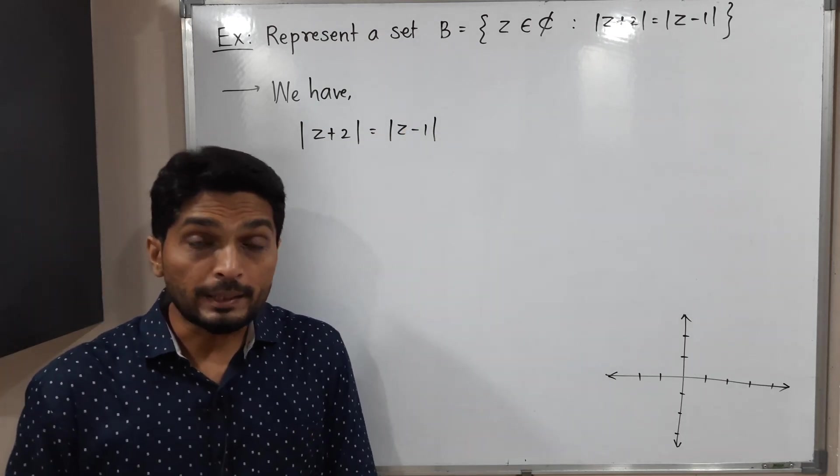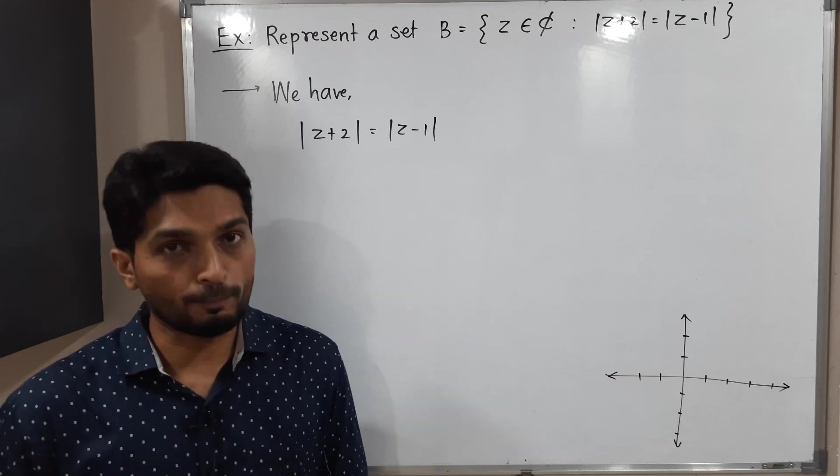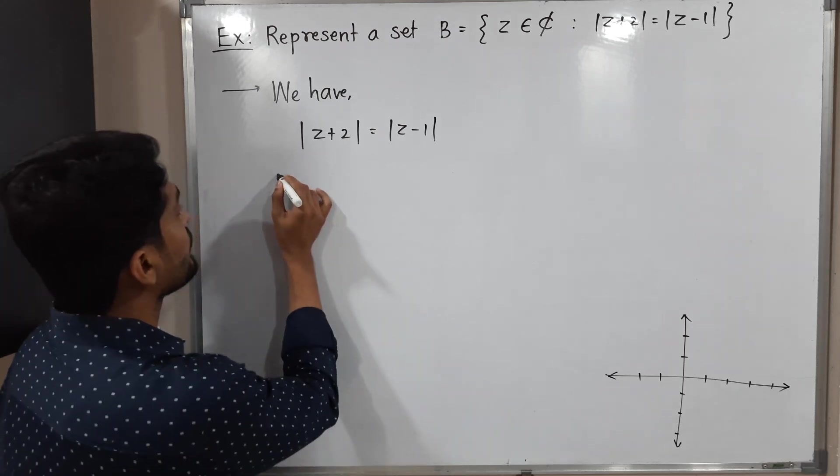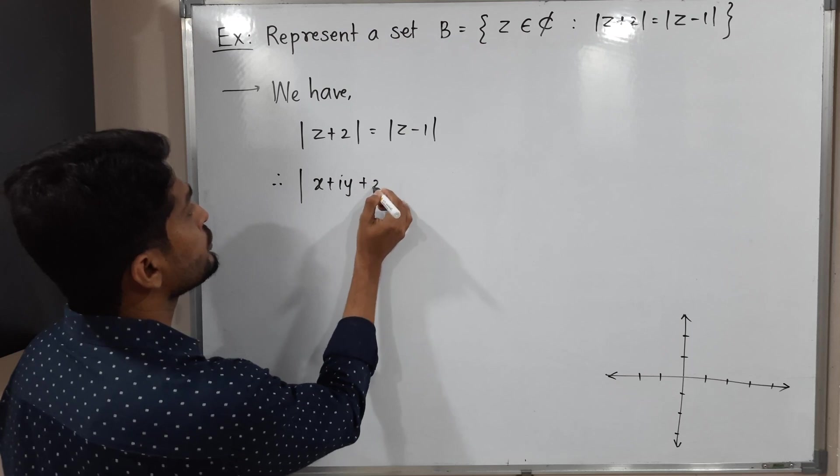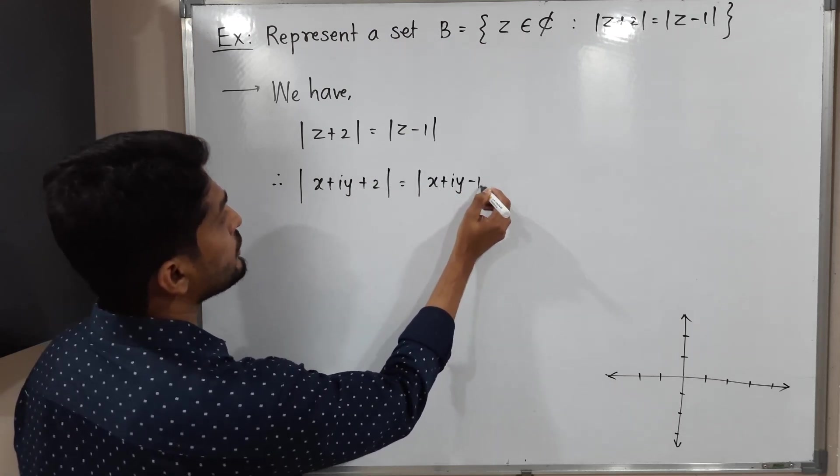So in this case what we do? We replace z by x plus i y which is a cartesian form of a complex number. So I am going to replace z by x plus i y. Let us see what will happen. Mod x plus i y plus 2 is equal to mod x plus i y minus 1.